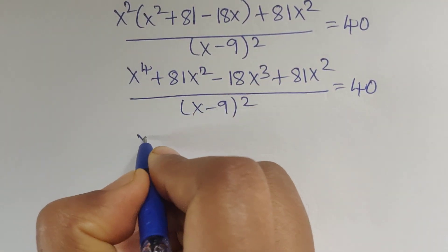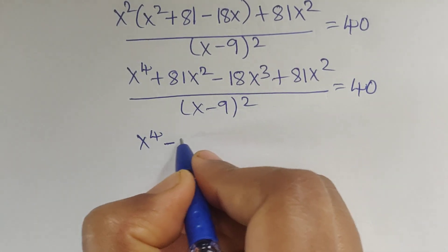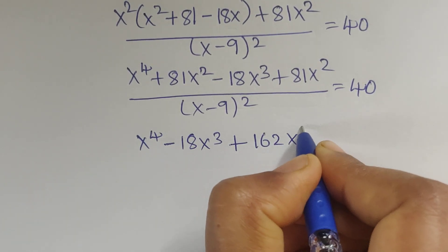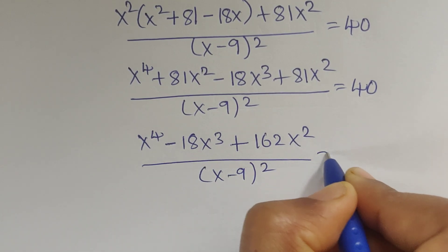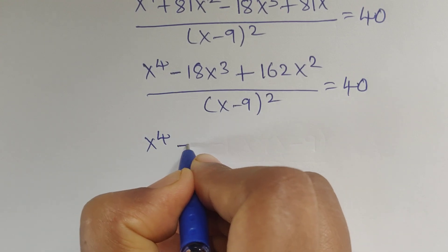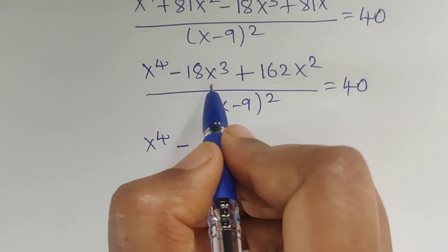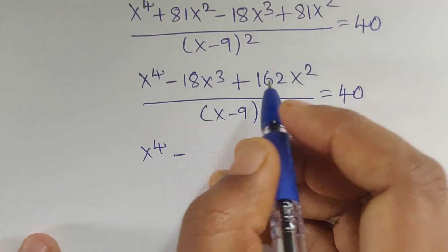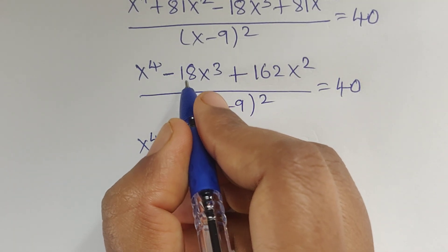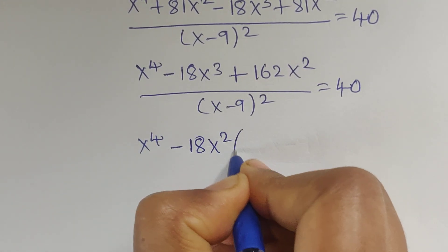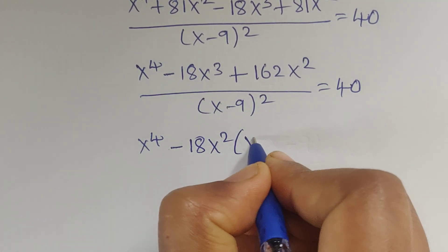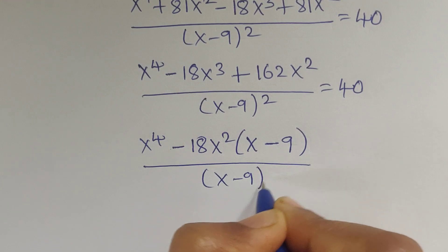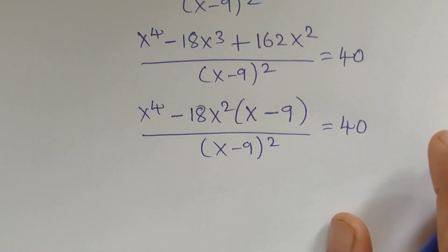In these two terms we have a common factor: 18x squared. Taking out 18x squared as common, we write the leftover numbers. So 18 times 9 equals 162. Then we get: x to the power 4 minus 18x squared, with 9 divided by x minus 9 whole to the power of 2, equal to 40.